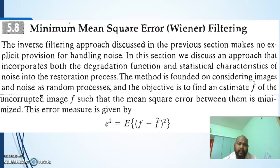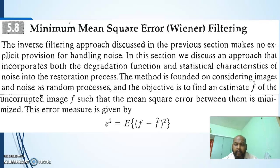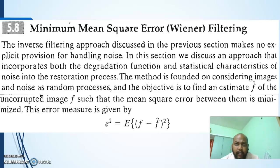In this filter, the statistical characteristics of noise are taken into consideration. To find out the errors, the statistical characteristics of noise should be combined with the original image. Both the input image and the noise are considered as random processes, and from that the restored image is estimated.